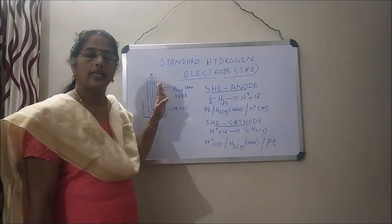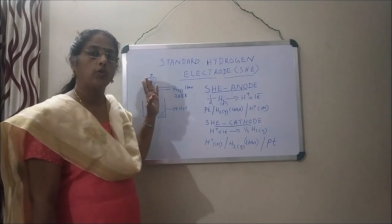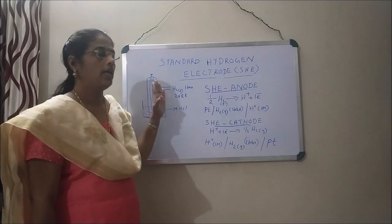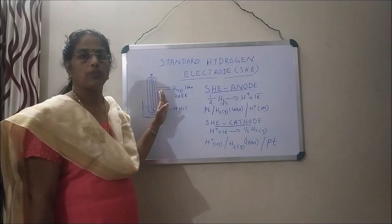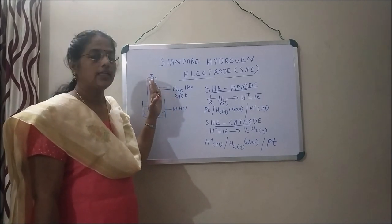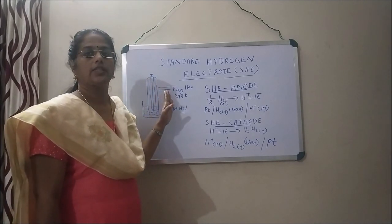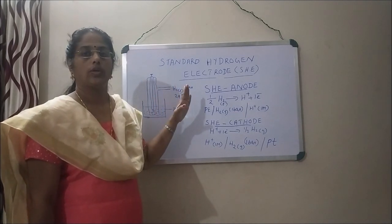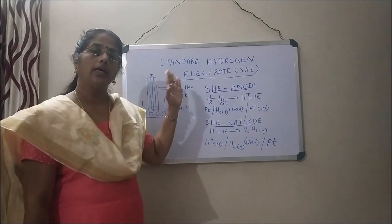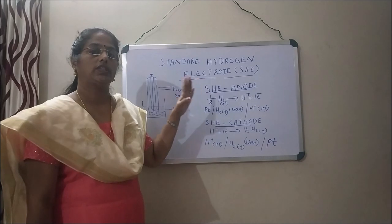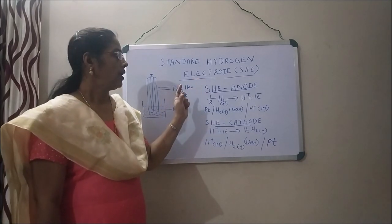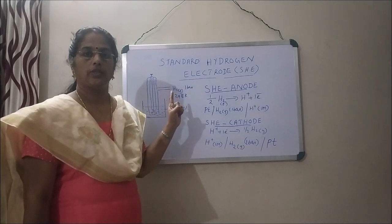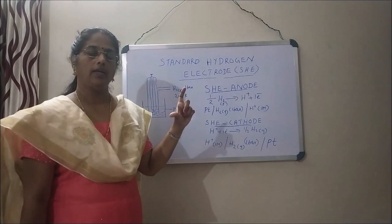The electrode potential of the standard hydrogen electrode is assumed to be zero. The standard hydrogen electrode can act as both cathode and anode, and that depends upon the other half cell to which it is connected.